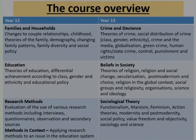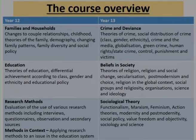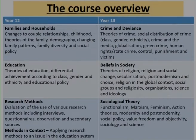Crime and deviance is a very interesting topic. We start with theories of crime — different explanations from different sociological perspectives. We also look at the social distribution of crime: why particular classes of people, gender, and ethnicity seem to relate to crime patterns. Other topics in the crime section include crime in the media and how far the media may cause people to commit crime, globalisation, green crime, human rights, state crime, how we control and punish crime in our society, and the victims of crime.